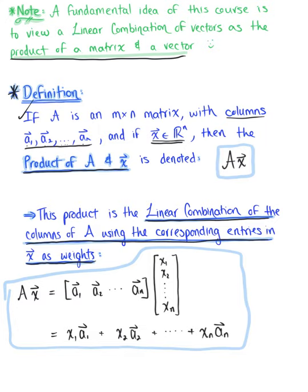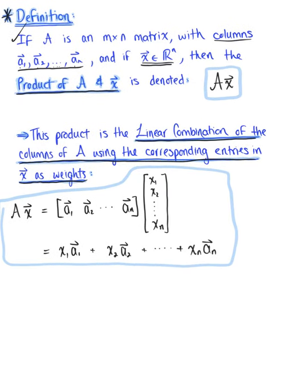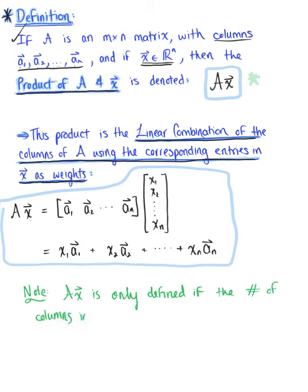One important note before we look at the equivalence of these three systems: the product A times vector x is only defined if the number of columns in matrix A equals the number of entries in vector x. That's going to be important to keep in mind as we proceed.